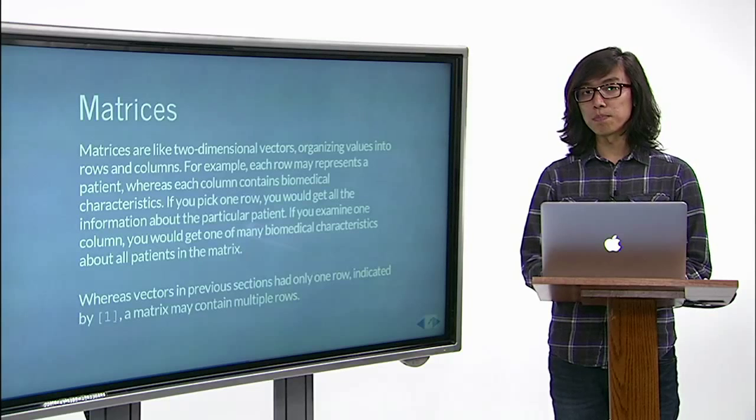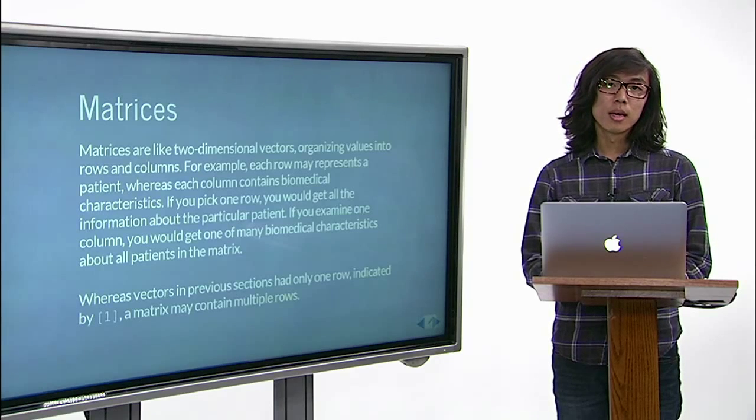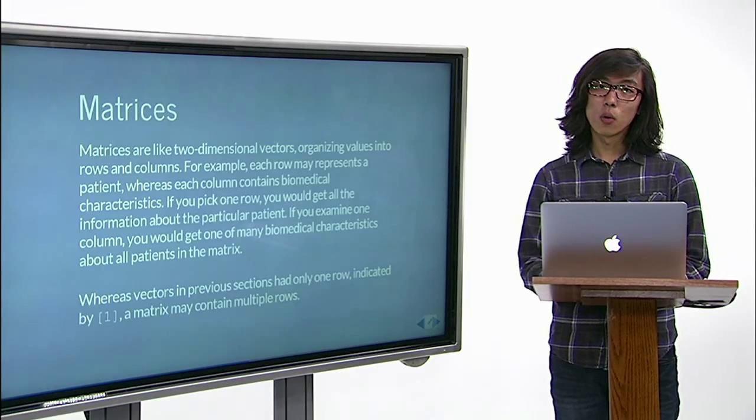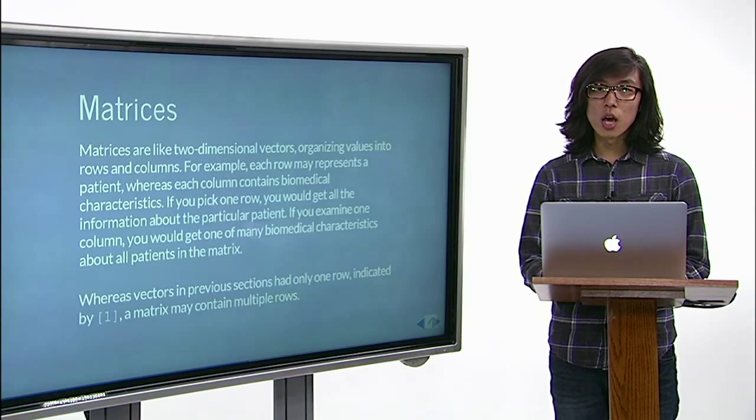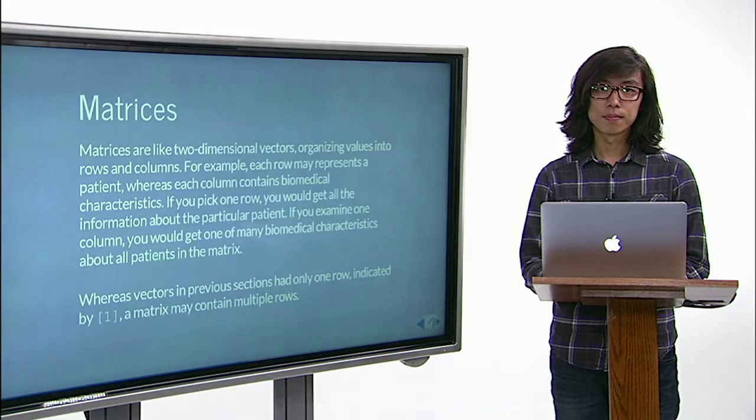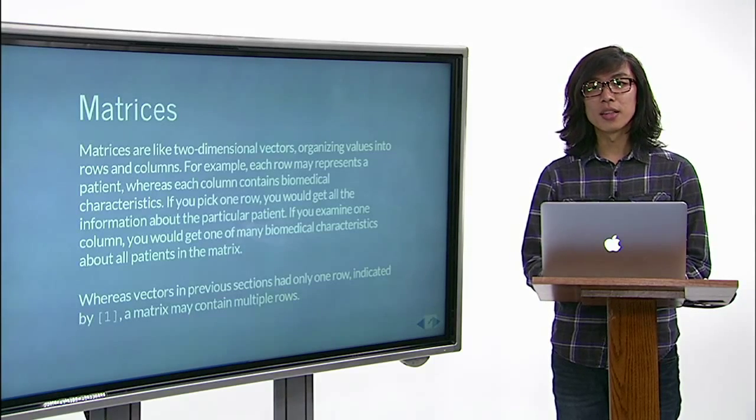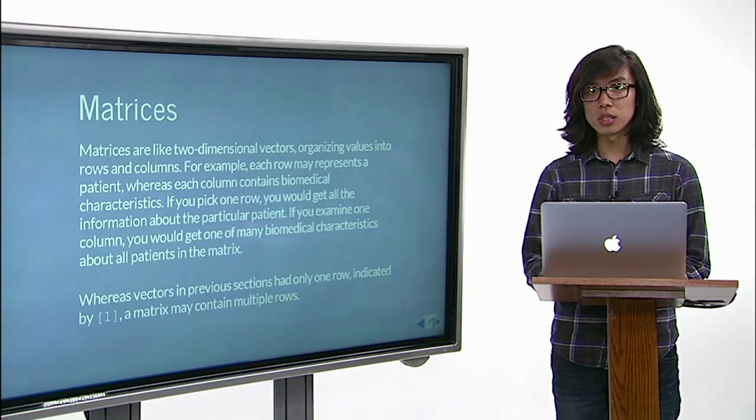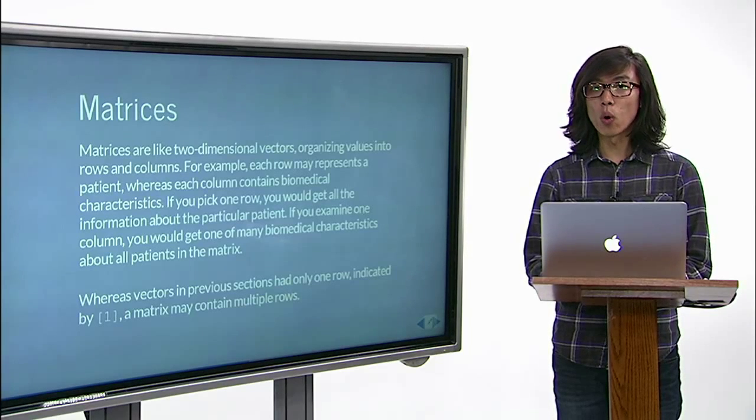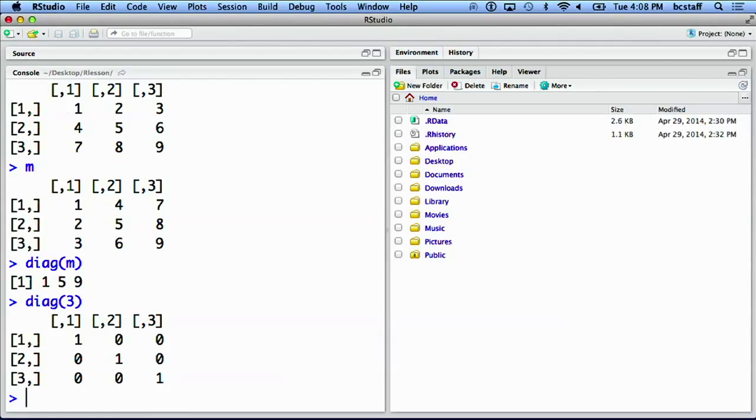Diagonal function behaves differently based on an input. As we just saw, with a matrix, diagonal function will return a vector of diagonal elements. For a single numeric value, it will create an identity matrix, which is a square matrix with ones in diagonal positions. Here, we create a 3 by 3 identity matrix.